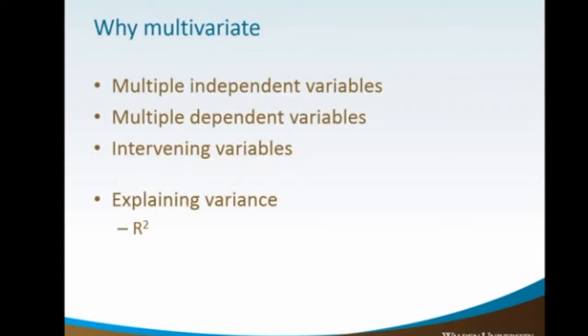When we're talking about multivariate, you can have, frequently it's multiple independent variables, one dependent, multiple independent variables. There are some cases, and the MANOVA is an example of that where you can actually have multiple dependent variables. You can also have intervening variables.